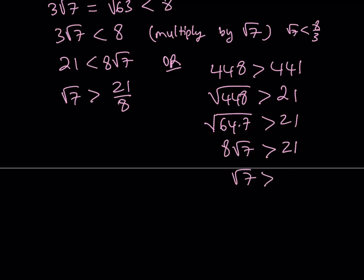And root 7 is greater than 21 eighths. So it gives us the same thing in a different way. But the idea is again comparing root 7 to a smaller rational number.